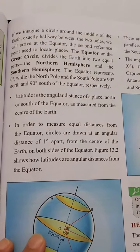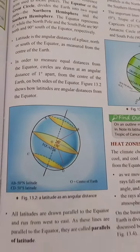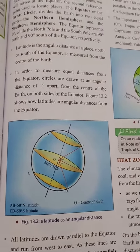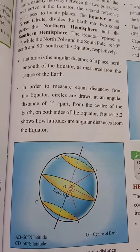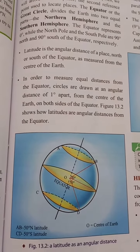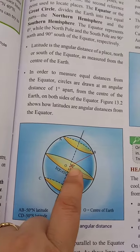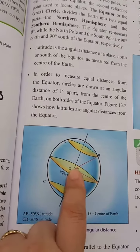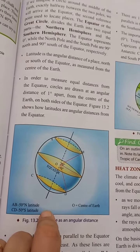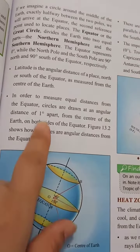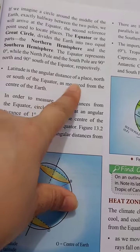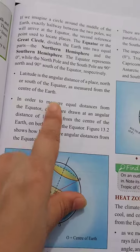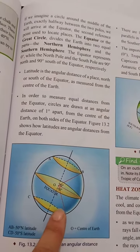Figure 13.2 — Latitude as an Angular Distance — shows how latitudes are angular distances from the equator. See this: latitudes are the angular distance from the equator. This is the equator, and the angle is given. Latitude is the angular distance of a place north or south of the equator as measured from the center of the earth.